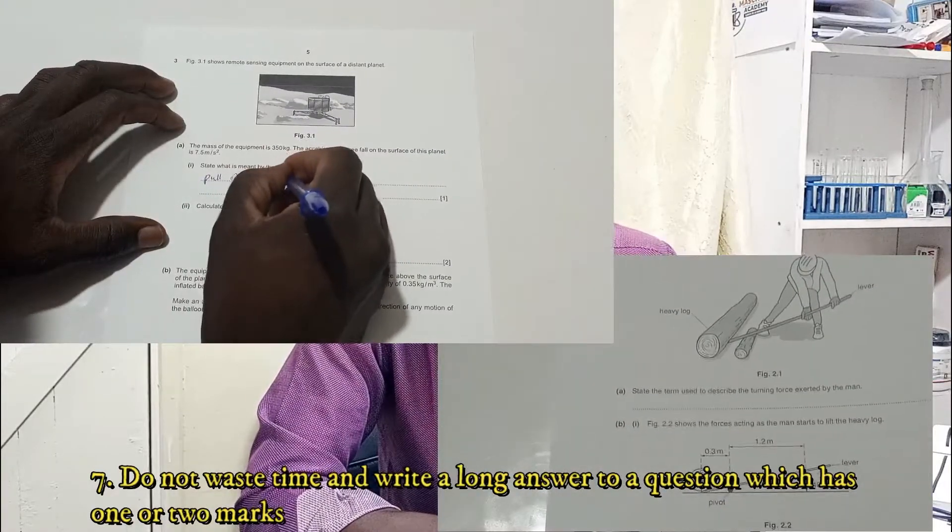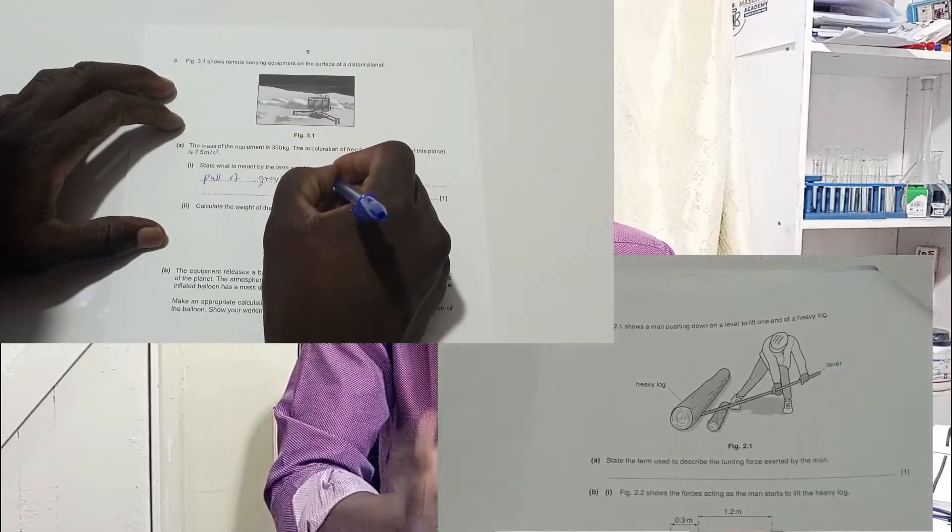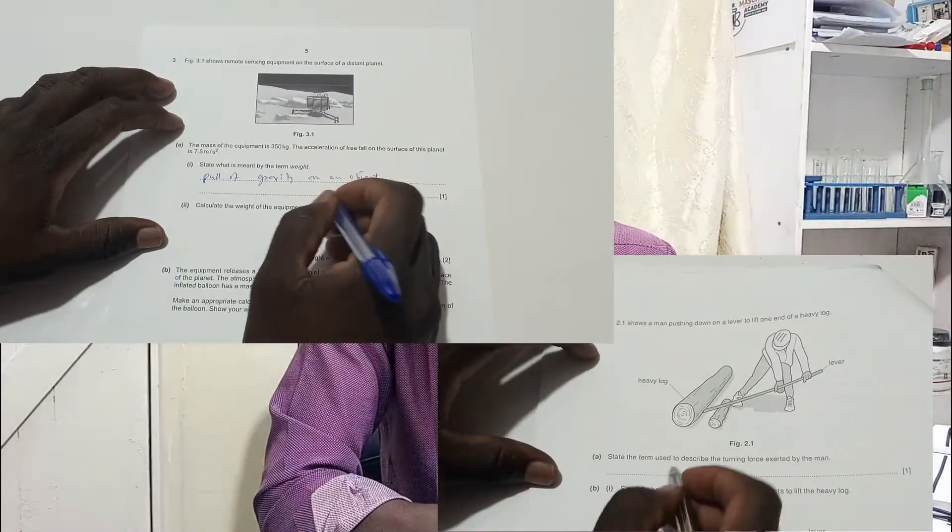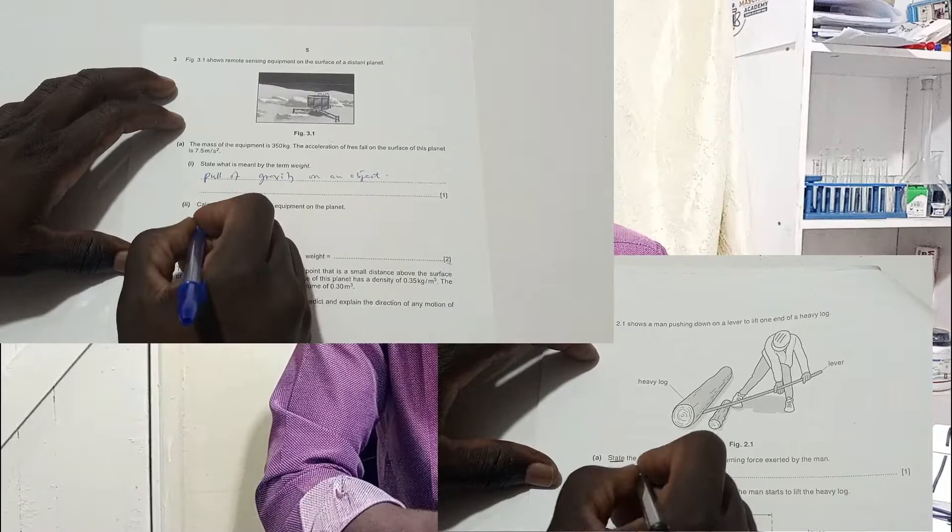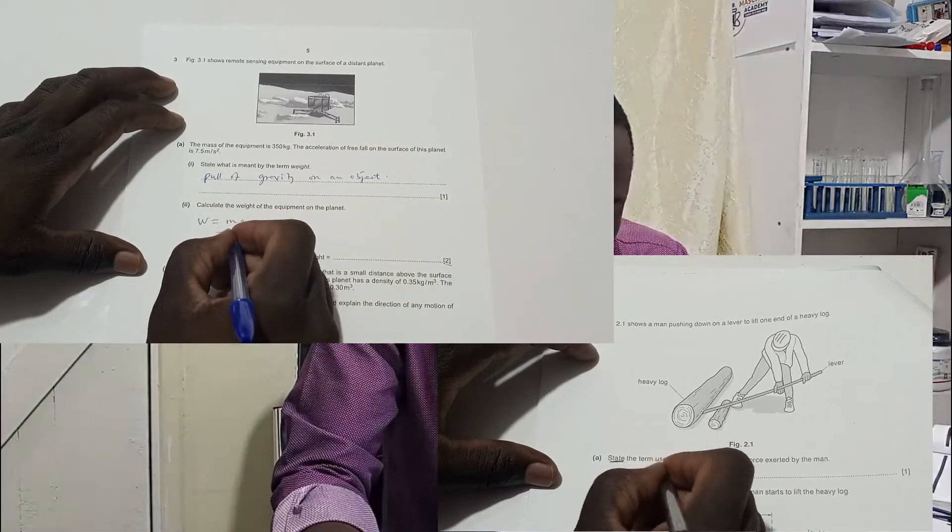Do not waste time and write a long answer to a question. Do not waste time and write a long answer to a given question which has one or two marks. When the question is one or two marks, go direct to the answer. As you can see what I'm doing here.